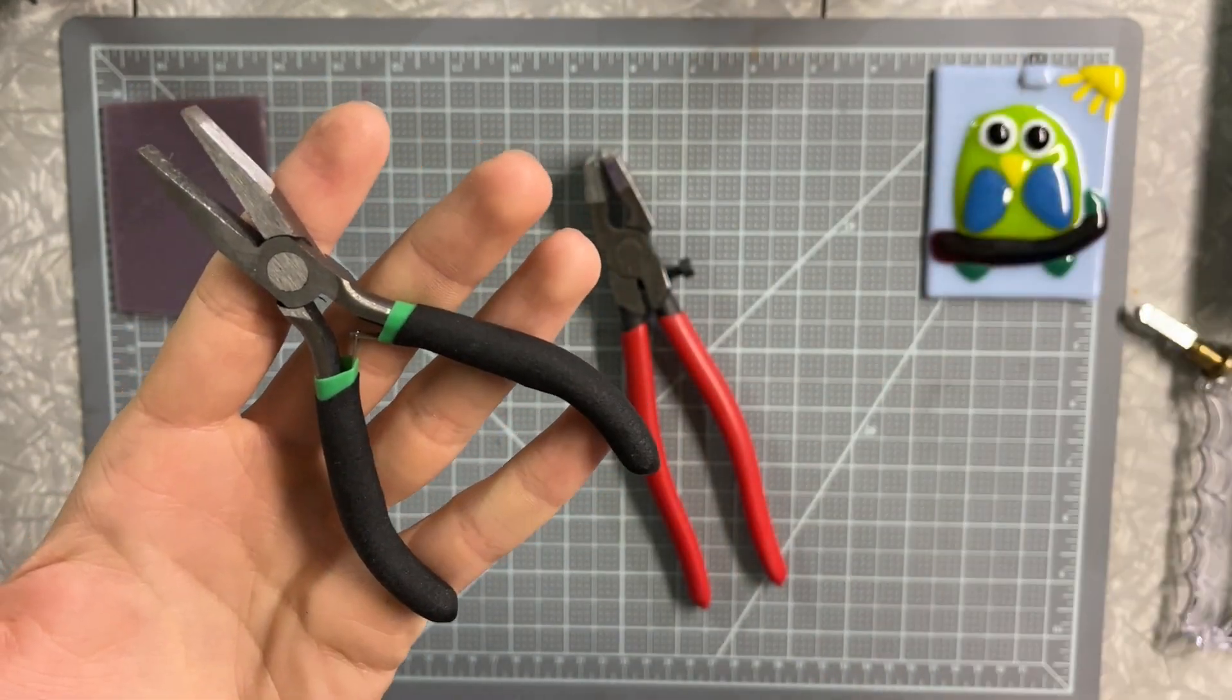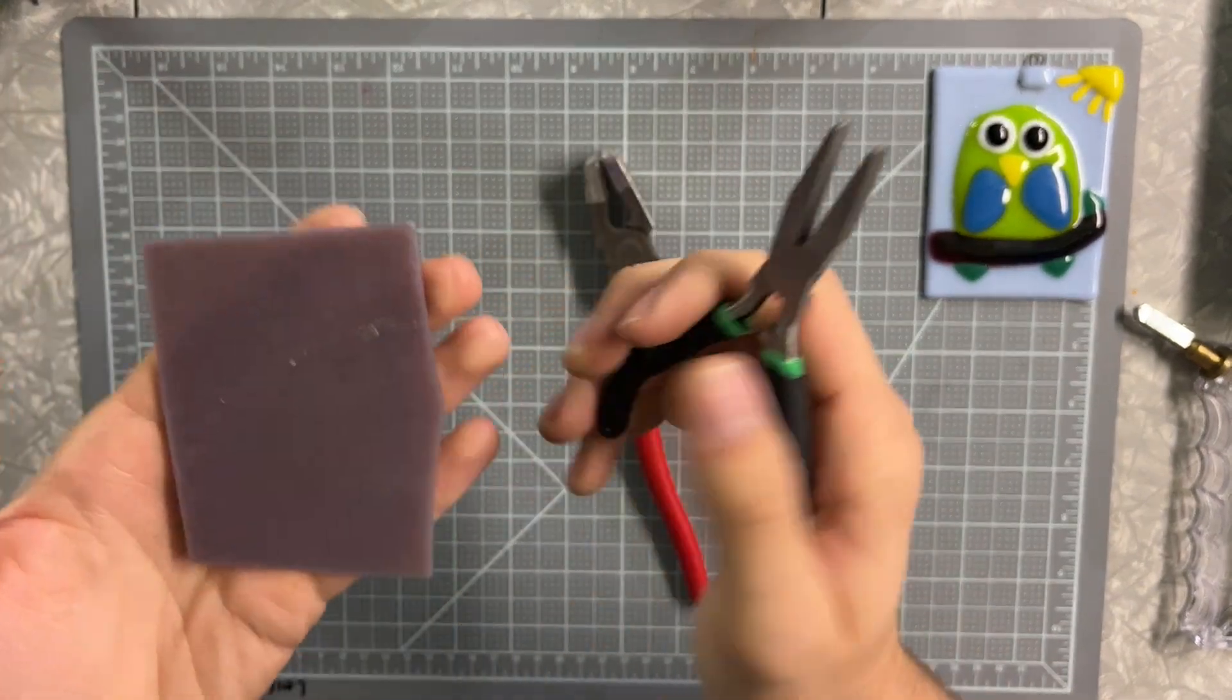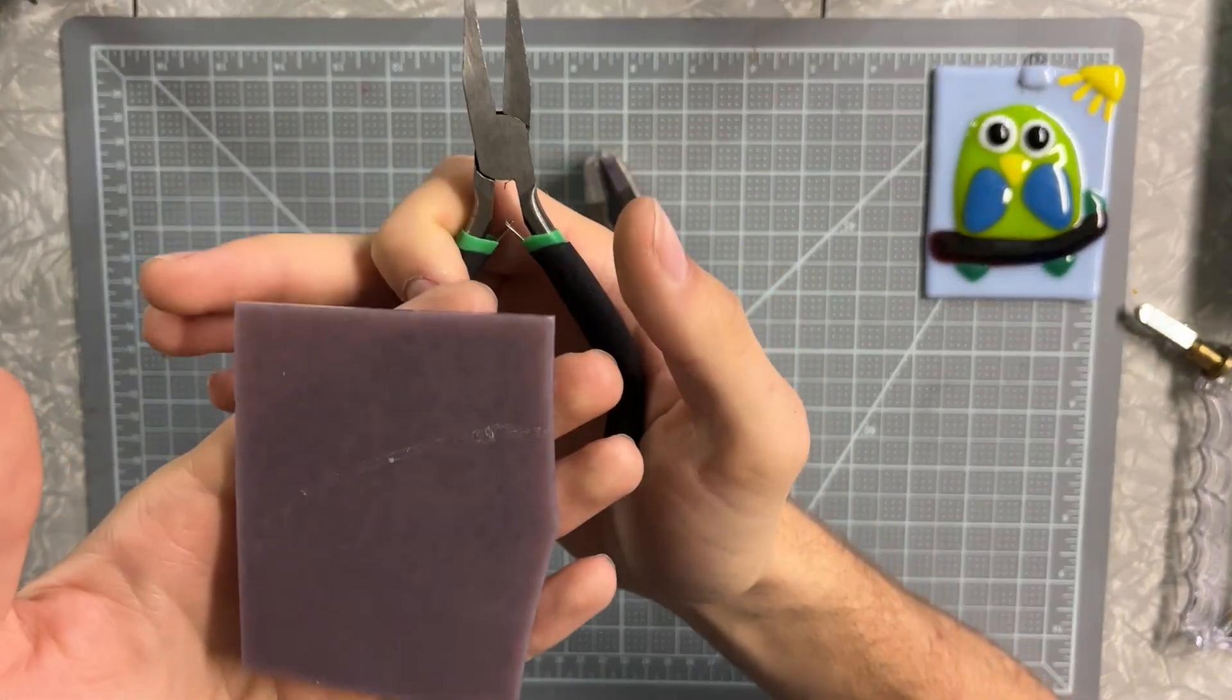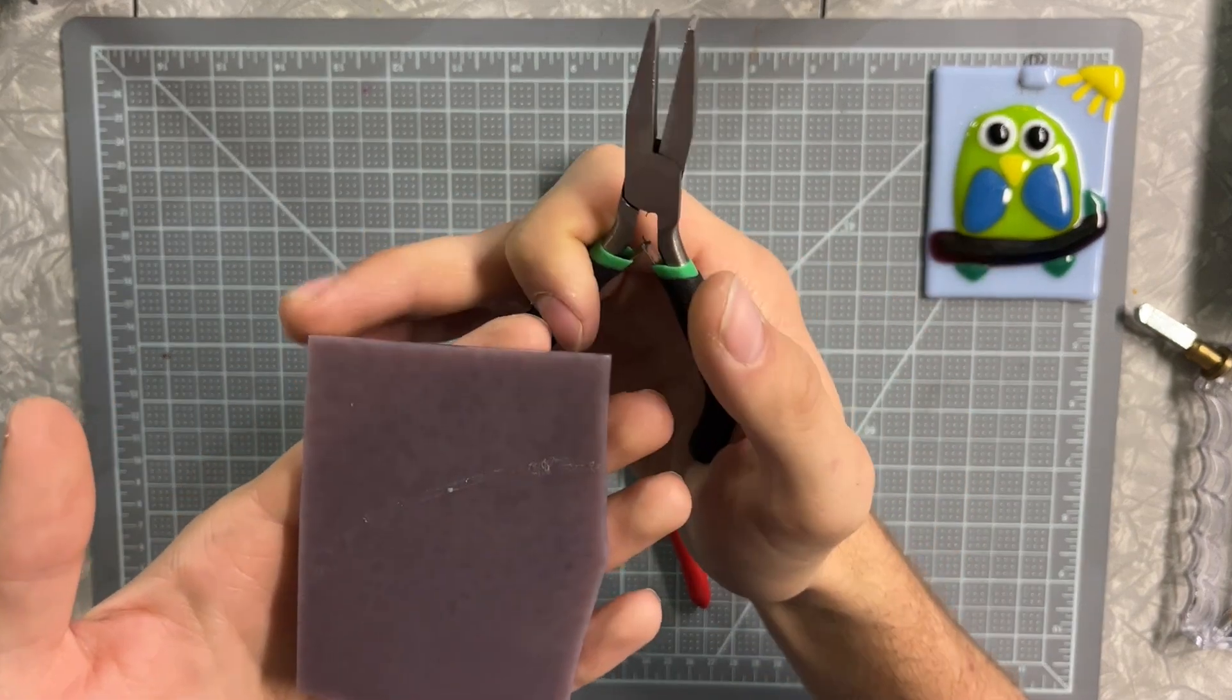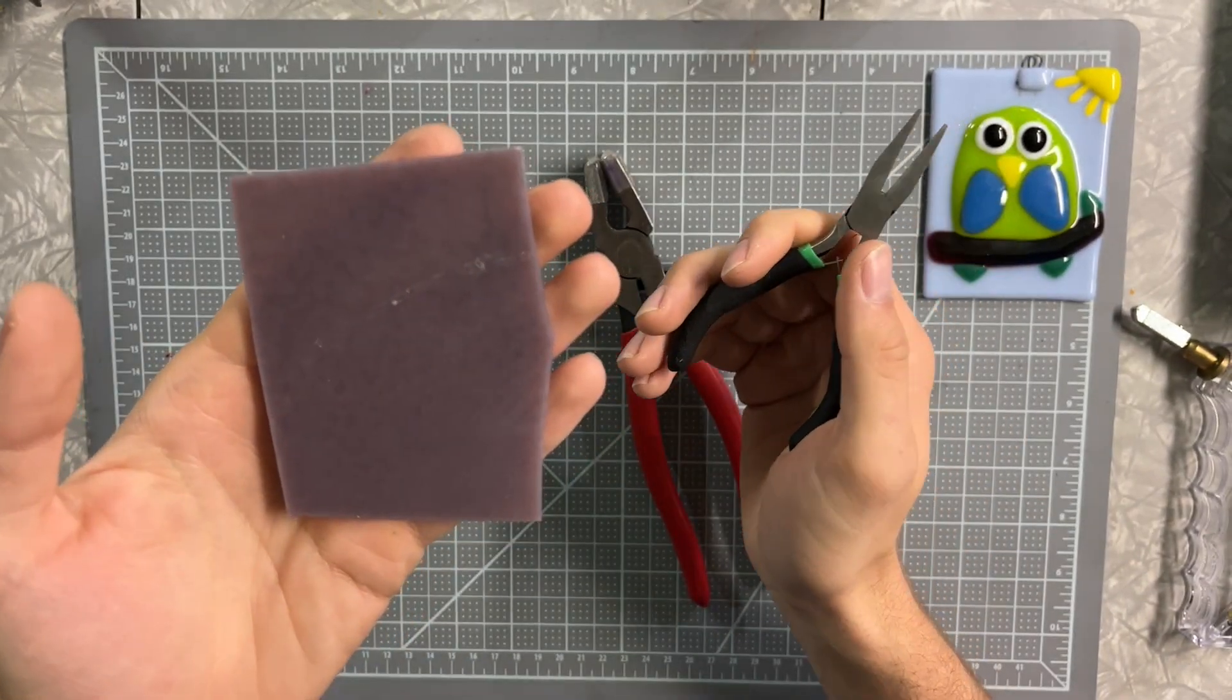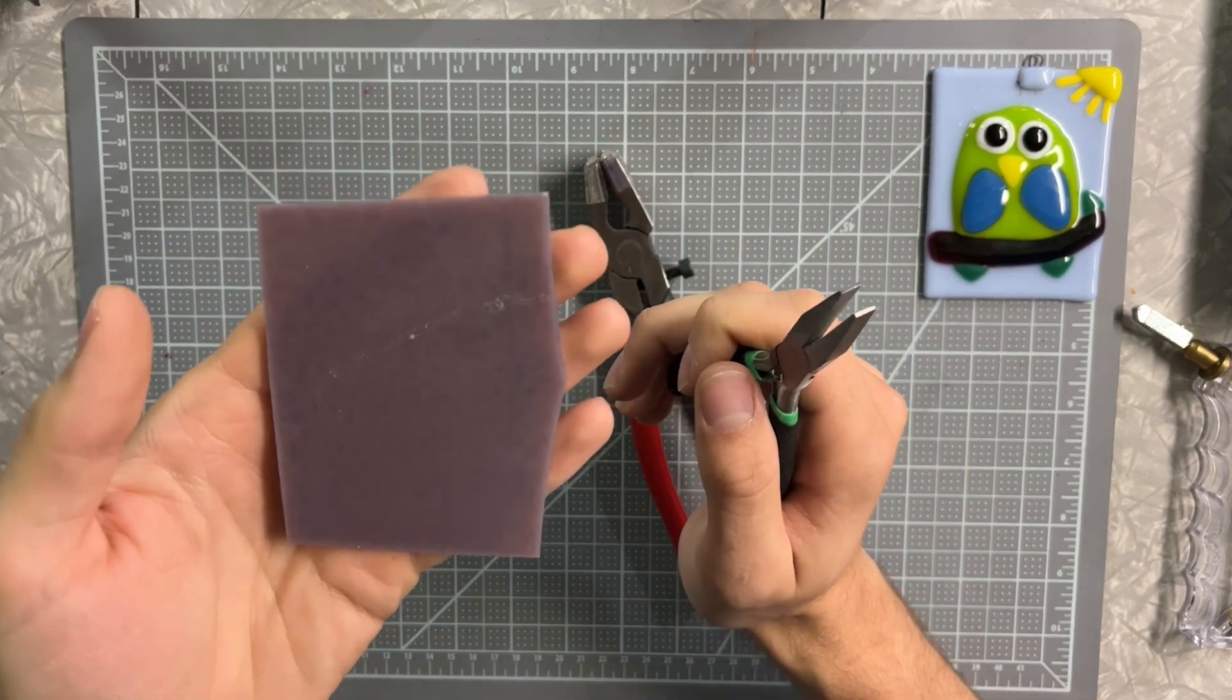With the grozing pliers, what they do is you can nibble off corners of glass. It's really important to do this because glass can be so sharp. You can see on this piece of purple glass I have four really sharp corners, and the edges can also get really sharp as well.